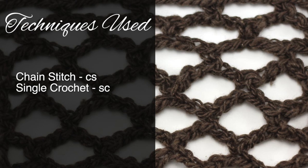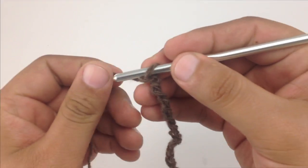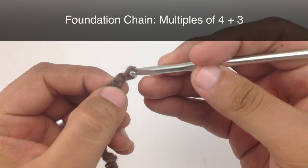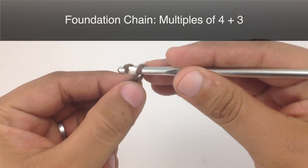For this stitch you will need to know the following techniques: chain stitch and single crochet. To begin this stitch you must create a foundation chain in multiples of 4 plus 3.